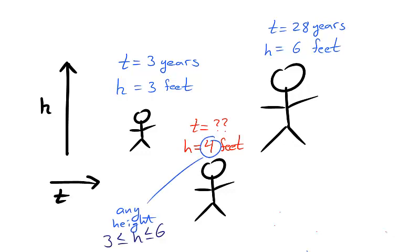In fact, you'd expect that there would be an age between 3 and 28 where I was any height between 3 and 6 feet. Attaining these intermediate values is exactly what the Intermediate Value Theorem guarantees.